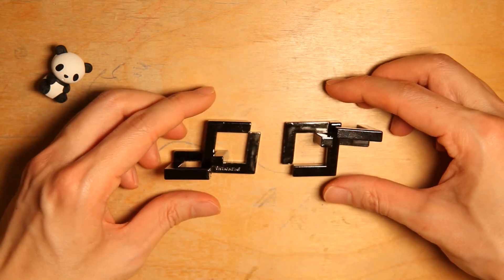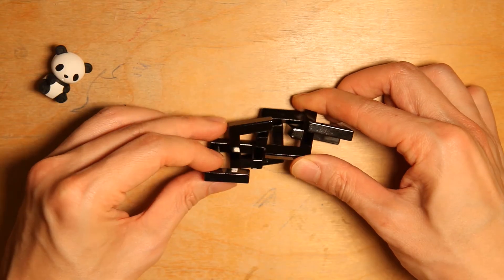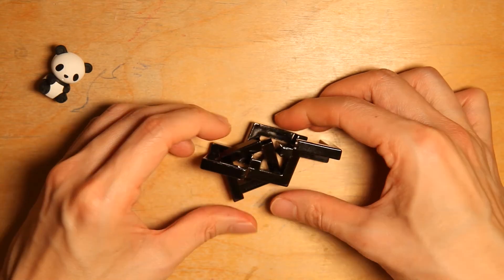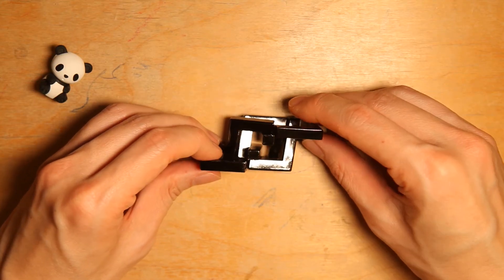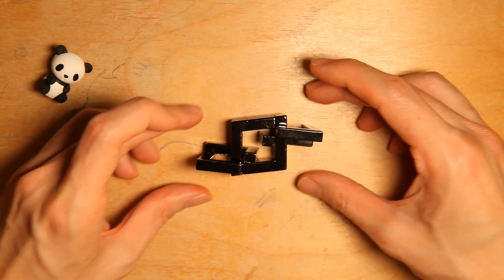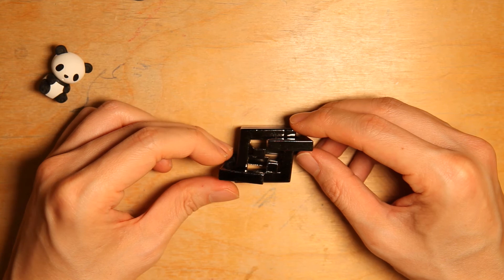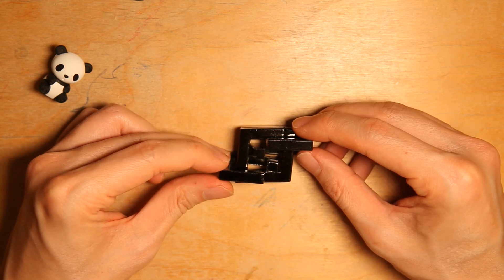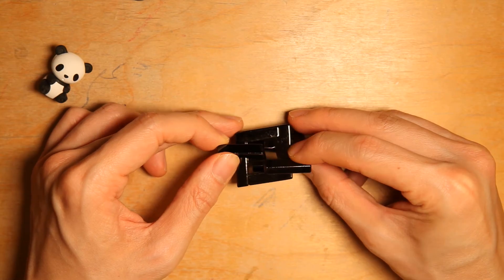Now move the Hanayama pair together like so and put the pairs through so the Hanayama pair goes back together. Push the two Quartet pair pieces together and twist the left-hand side upwards and the right-hand piece downwards, like so.